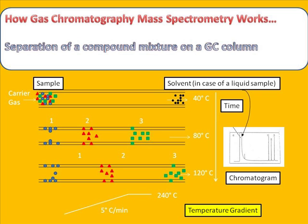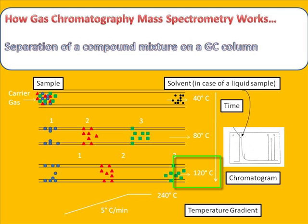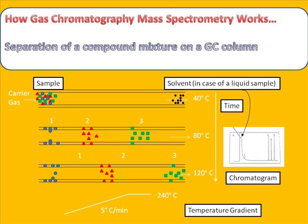We also apply a temperature gradient, and this temperature gradient helps us to optimize the separation of the compound mixture. For instance, here we are running a gradient at five degrees Celsius per minute, all the way up to 240 degrees. The temperature gradient is also important in order to speed up the separation process.